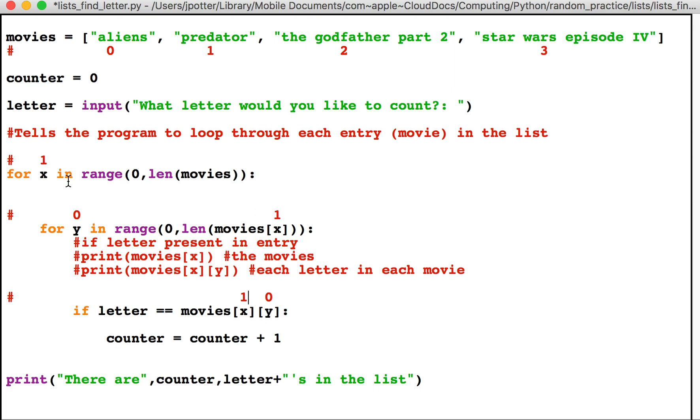Okay, so what this is now doing is looking at movies x, and x is now one, so it's looking at movies and whatever is in index position one, which is 'predator'. And down here we're saying if letter is equal to movies x, which is 'predator', and then the first item in 'predator', which is 'p'.